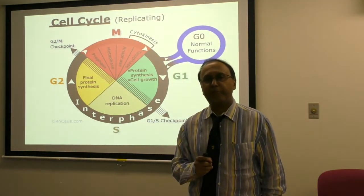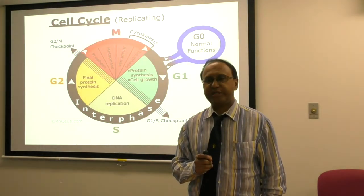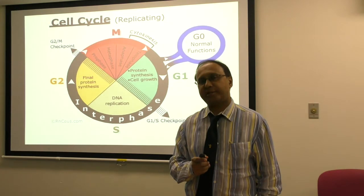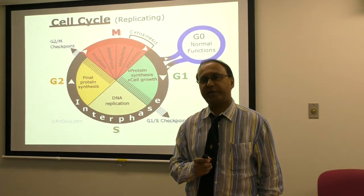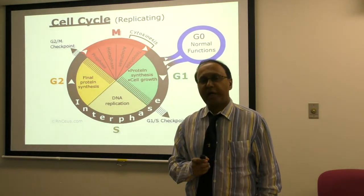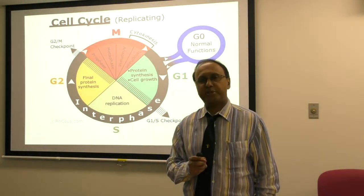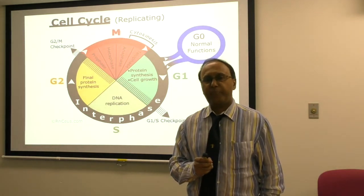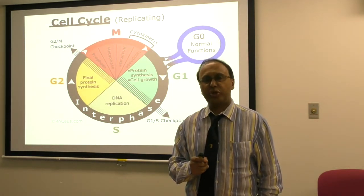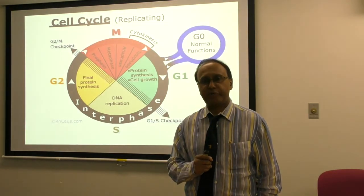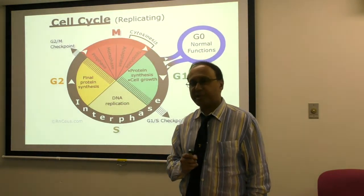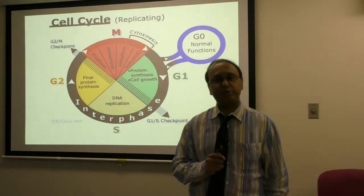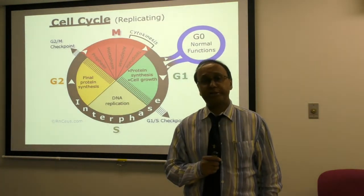In each cell, there is a given mechanism where a cell can divide, but it does not endlessly divide, because there are checkpoints in the cell cycle that have the ability to stop further cell division. These checkpoints are located at three particular locations on the cell cycle.